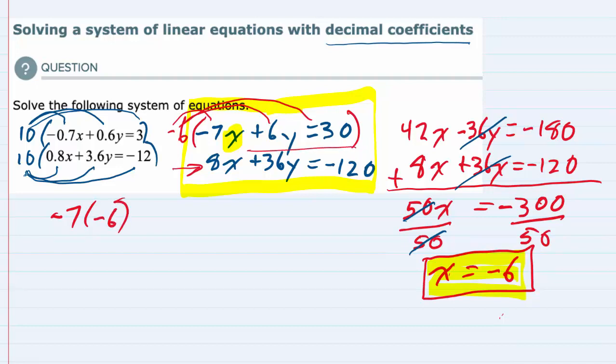We can now simplify. On the left, -7 times -6 is a positive 42. Bring down the 6y equals 30.